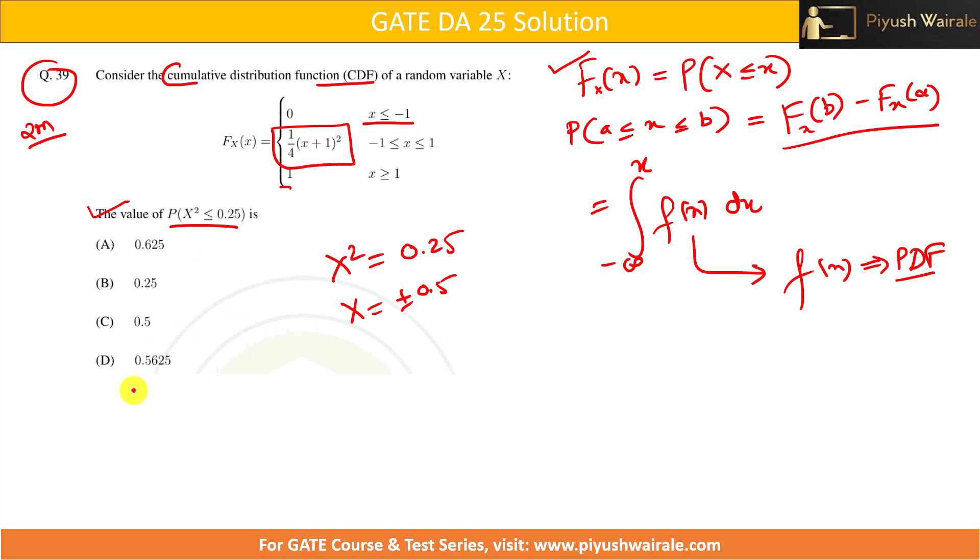So can we write this probability as probability where X varies from -0.5 ≤ X ≤ 0.5? This will be equivalent to this. Can you write this like this? Yes, and we know this particular property.